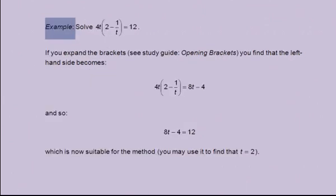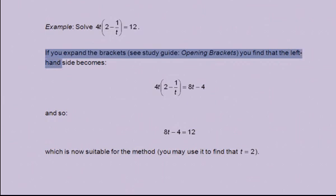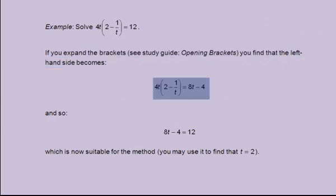Example. Solve 4t(2 - 1/t) = 12. If you expand the brackets, see study guide Opening Brackets, you find that the left hand side becomes 4t(2 - 1/t) = 8t - 4. And so, 8t - 4 = 12, which is now suitable for the method. You may use it to find that t equals 2.